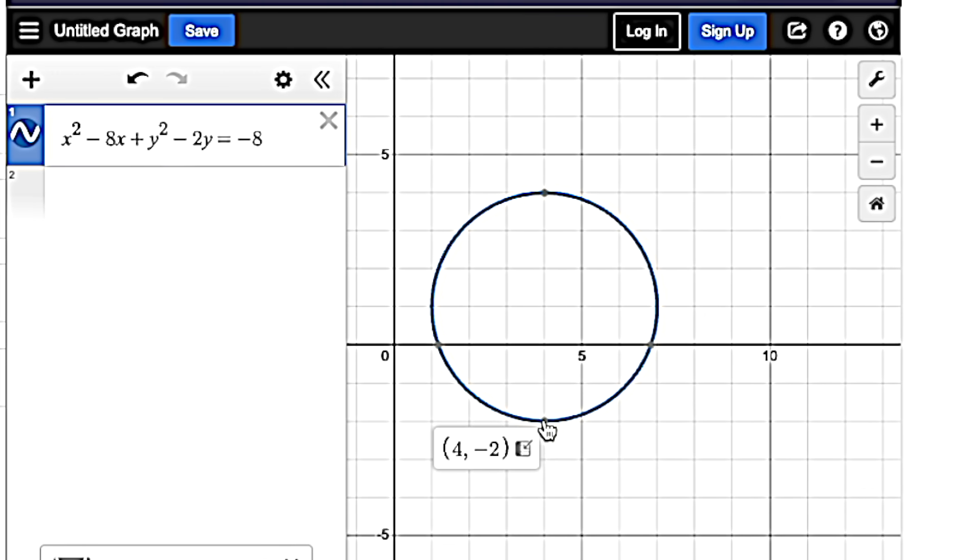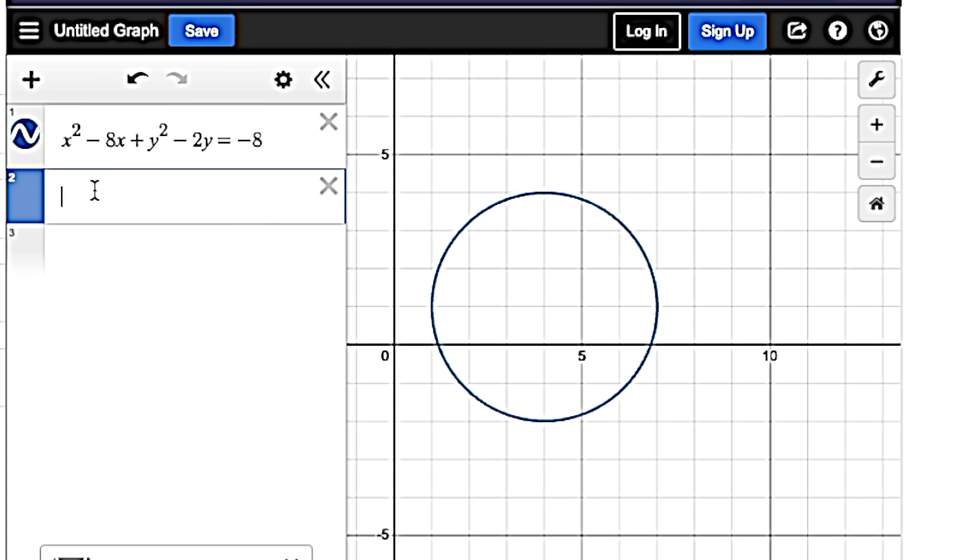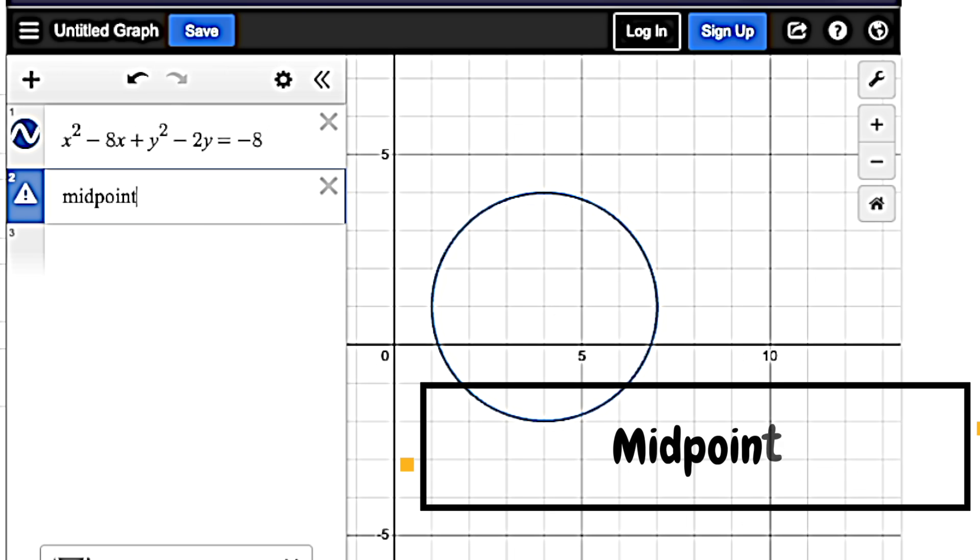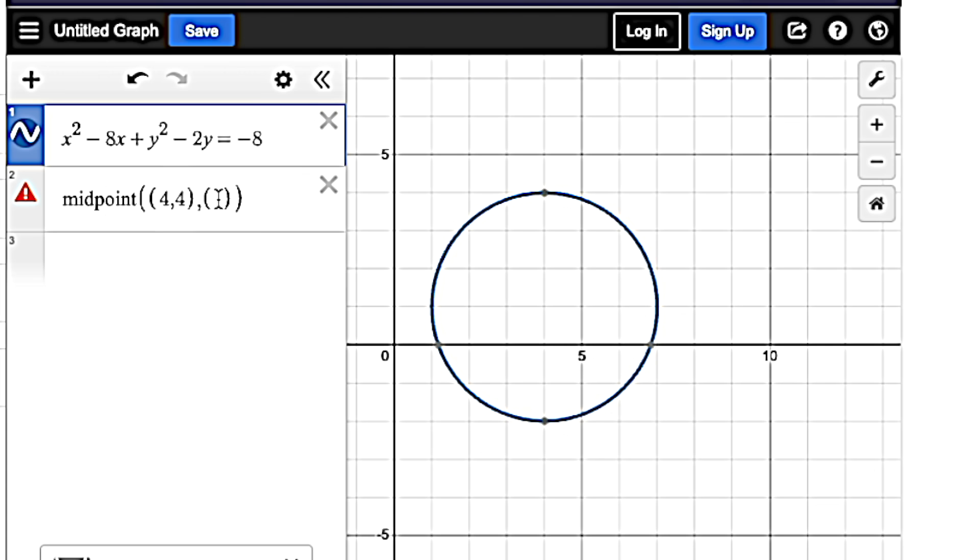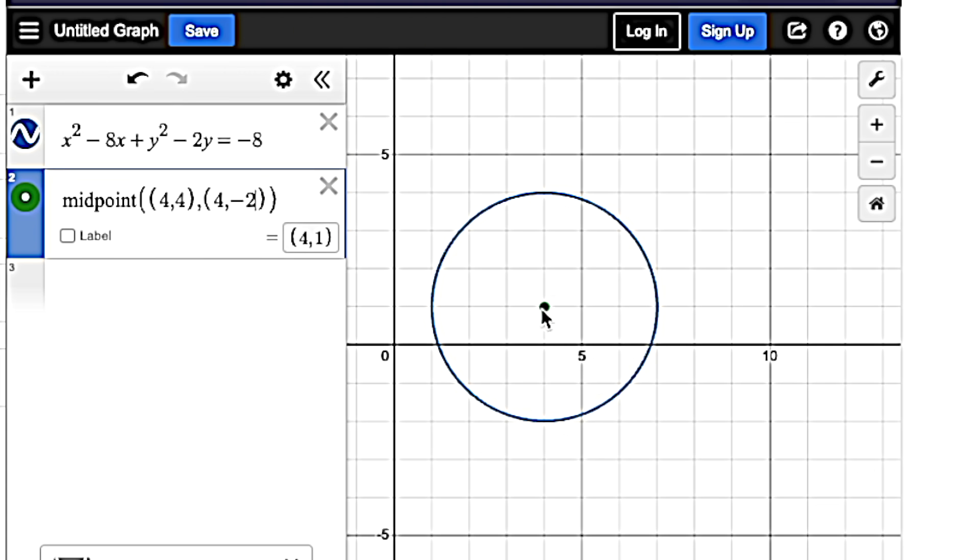The average of those numbers is going to be the exact center. So it's four, one, but if you're not comfortable with that, or if they give you more challenging numbers, you can use another Desmos hack, which is finding the midpoint of two points. Just type in the word midpoint parentheses, and then each point will have its own parentheses. That top point was four, four, comma between them. And then you put your other point, which was four, negative two, and boom, it gives you the midpoint four, one, just like that.